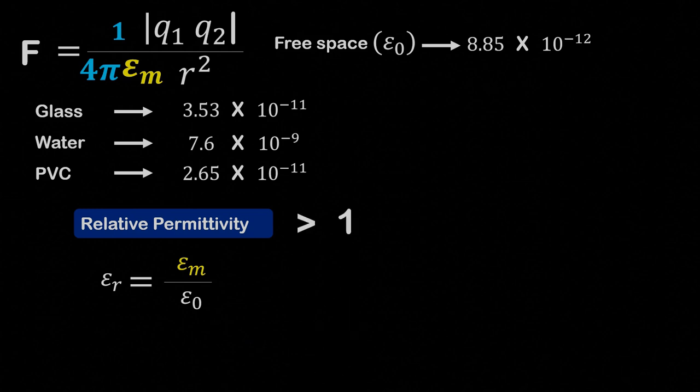The physical meaning of relative permittivity is simply how many times greater the permittivity of a medium is compared to the permittivity of free space.